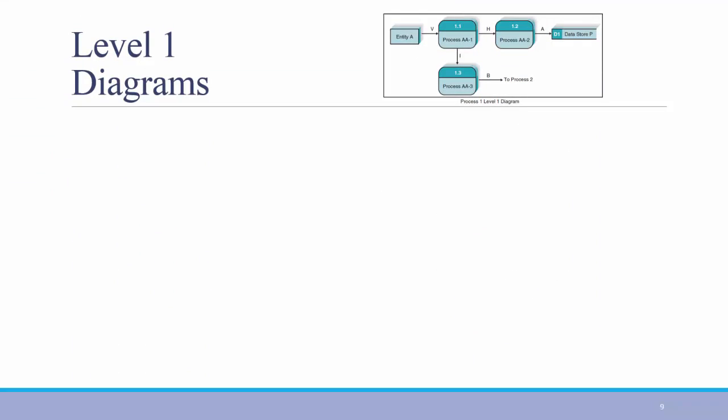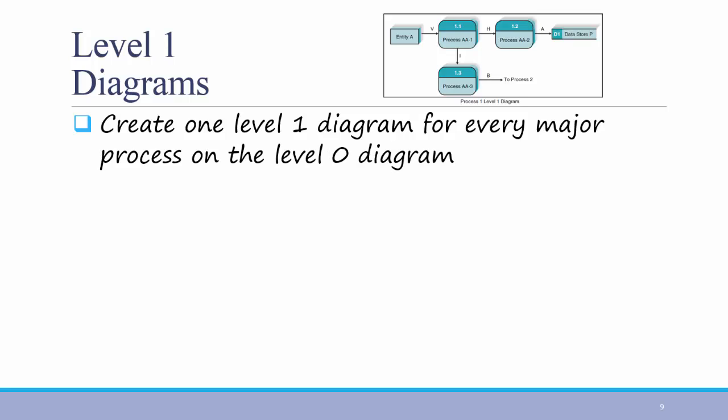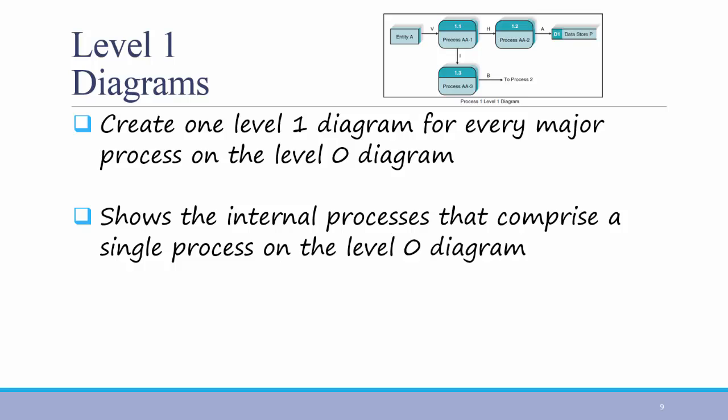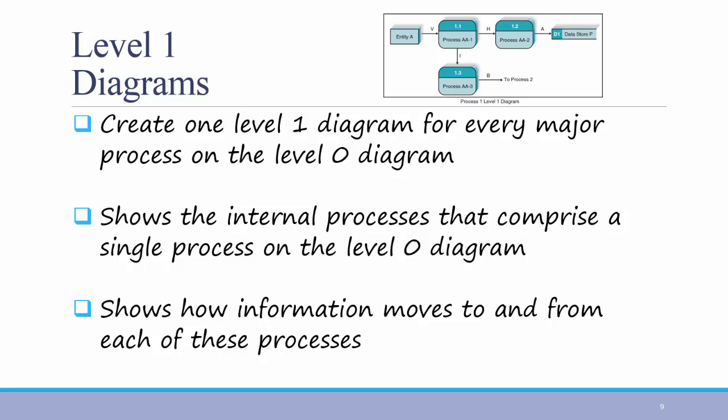Again, each process in the level 0 diagram can be broken out into its own level 1 diagram. Here you see process 1, level 1 diagram. Create one level 1 diagram for every major process on the level 0. It shows the internal processes that comprise a single process on the level 0. And it shows how information moves to and from each of these processes.